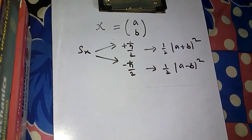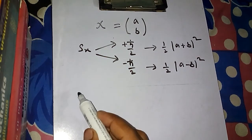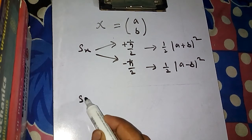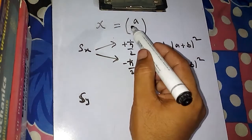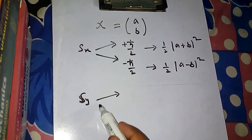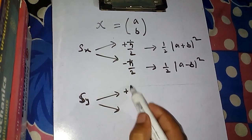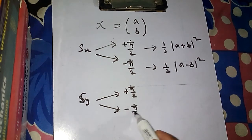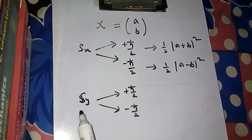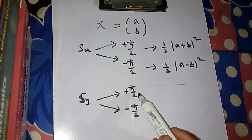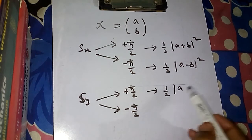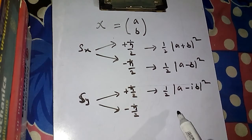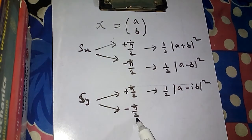Similarly, you can also find S_y — the Y component of the spin angular momentum — on this function. Again, two results are possible: either plus ℏ/2 or minus ℏ/2. The probability that you measure S_y and get plus ℏ/2 is given by (1/2)|a − ib|², and the probability that you get minus ℏ/2 is given by (1/2)|a + ib|².